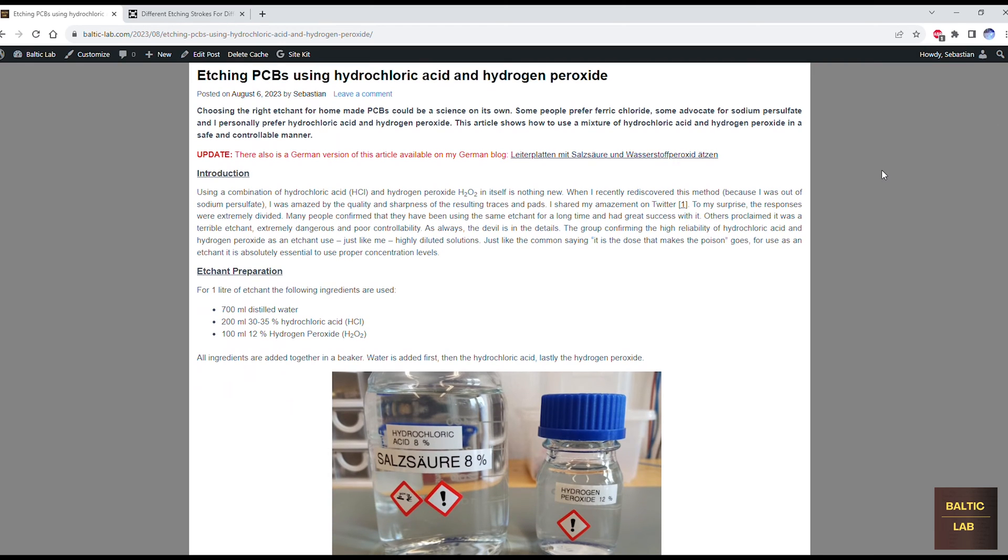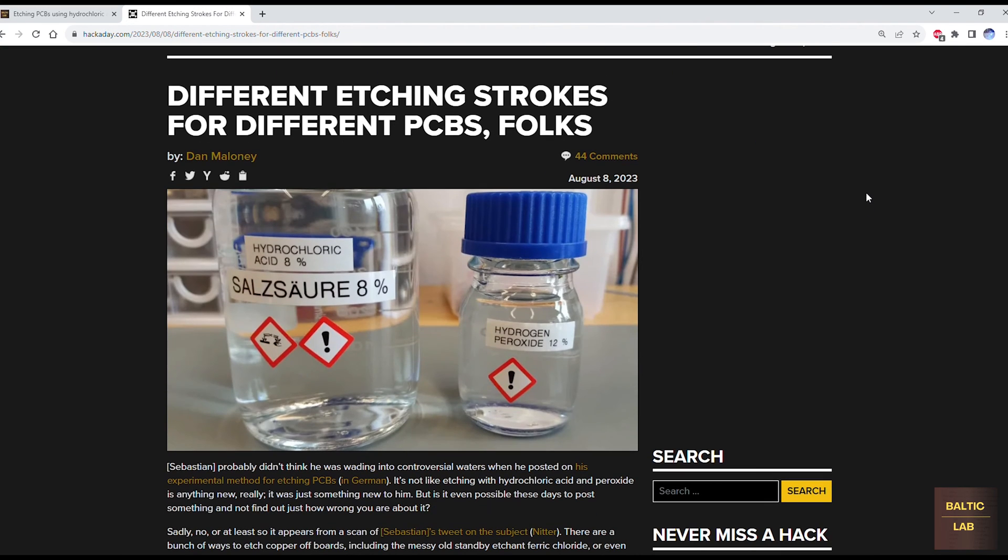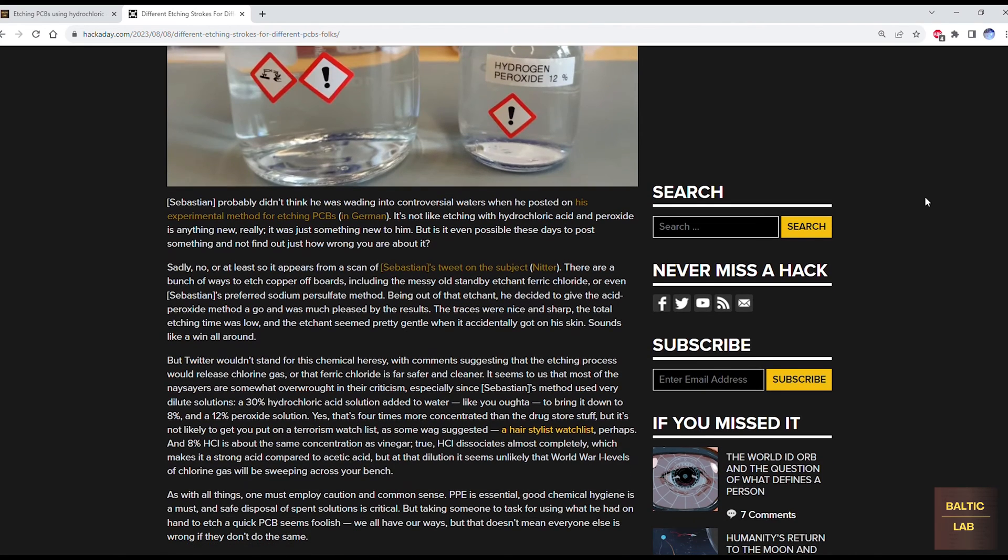Recently I wrote an article on how to etch PCBs using hydrochloric acid and hydrogen peroxide. This article was also featured on Hackaday and received quite a bit of polarizing responses.